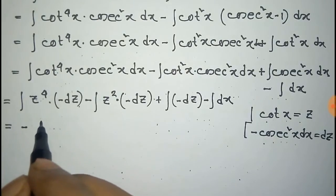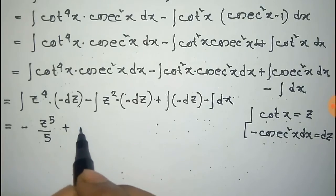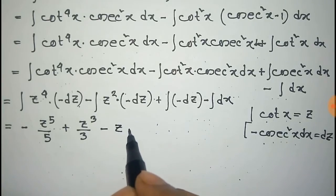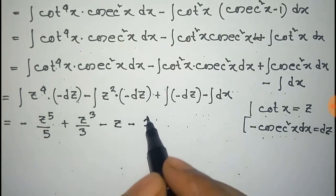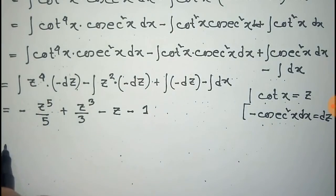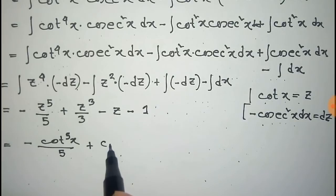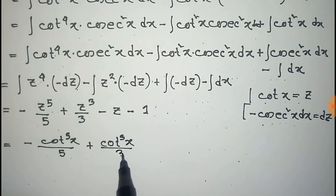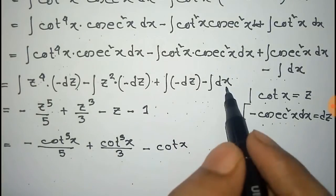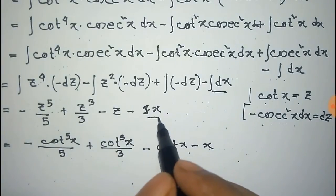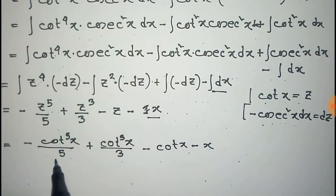The integration of z to the power of 4 is z to the power of 5 by 5, plus the integration of z squared is z to the power of 3 by 3, minus z, minus the integration of dx which is x. Now substituting back z equals cot x, we get cot to the power of 5x by 5 plus cot to the power of 3x by 3 minus cot x minus x plus constant. This is the final result for the integration of cot to the power of 6x.